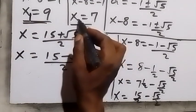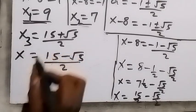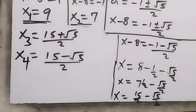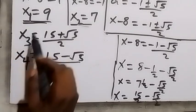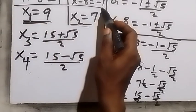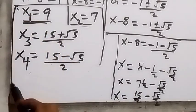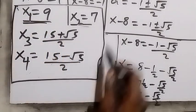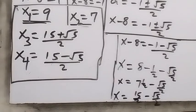So we have four solutions in total: x equals 9, x equals 7, x equals (15 plus root 5) over 2, and x equals (15 minus root 5) over 2. We have come to the end of the class. Thank you for watching, share this video and subscribe to my channel, turn the notification bell on, see you next class.